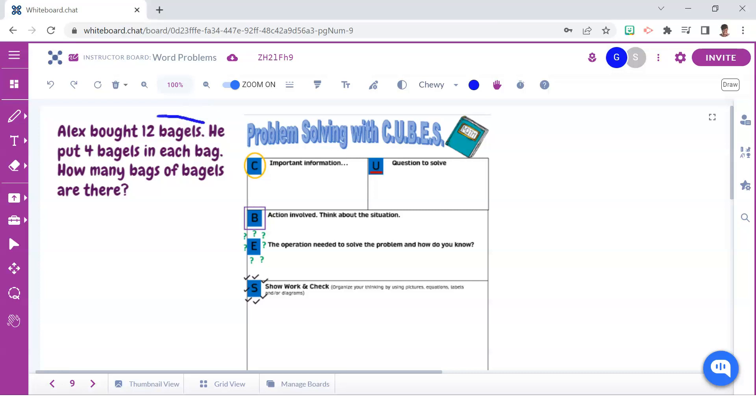The C reminds students to circle the key numbers needed to solve the problem. And since Alex took the twelve bagels and put four bagels in each bag, we can record that information right in this section.